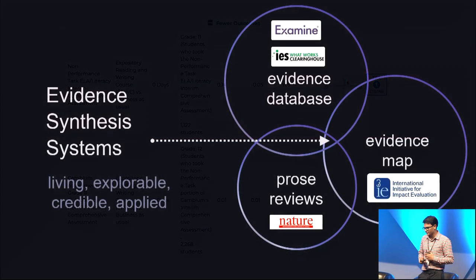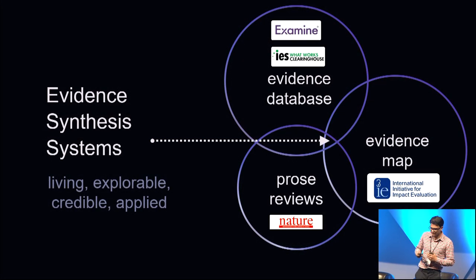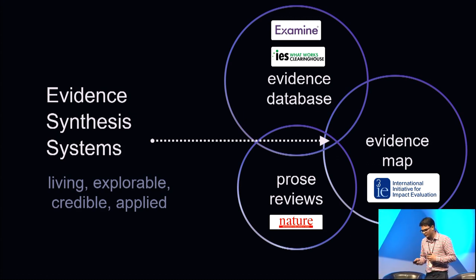This is one way to do knowledge translation. So in our work, we conceive of different ways of summarizing information in maps and databases and with prose reviews and try to come up with some kind of construct: evidence synthesis systems, which is this idea, an ideal of knowledge translation online that uses living information structures. So the information is dynamically updated. The information is explorable, it's credible, and it's application-oriented.